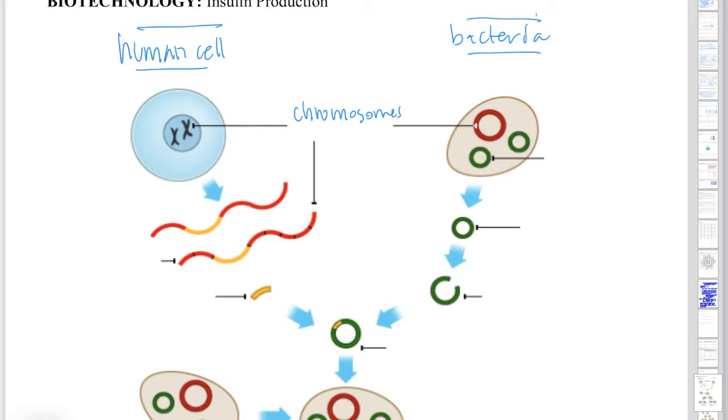So the reason that insulin production works in this way is because DNA is the universal language. So chromosomes in human cells are speaking the same language that chromosomes in bacteria cells are speaking. So the other piece and the reason that it works is because in bacteria, we have mobile genetic elements called plasmids. And this green right here is a plasmid.